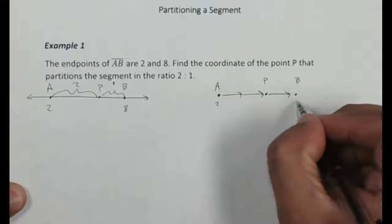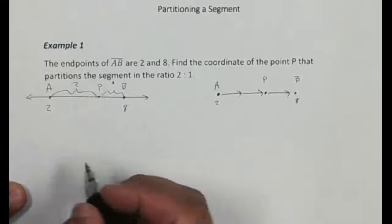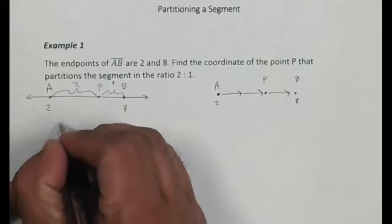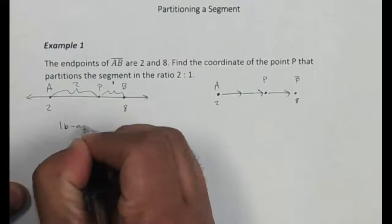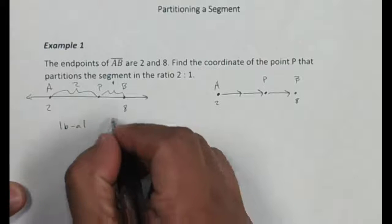So I have my value at 2, my A's at 2, and my B's at 8. Okay, so the first thing we need to do is we want to find the distance from B to A. Okay, so this is the absolute value of B minus A. That's the first thing we're going to do.